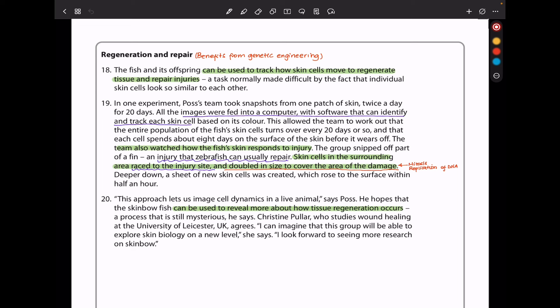In one experiment, Poss's team took snapshots from one patch of skin twice a day for 20 days. All the images were fed into a computer with software that can identify and track each skin cell based on its color. However, this allowed the team to work out that the entire population of the fish skin cells turn over every 20 days or so, and that each cell spends about 8 days on the surface of the skin before it wears off.